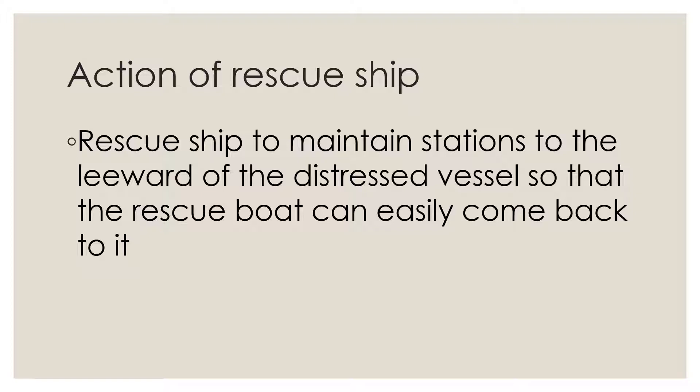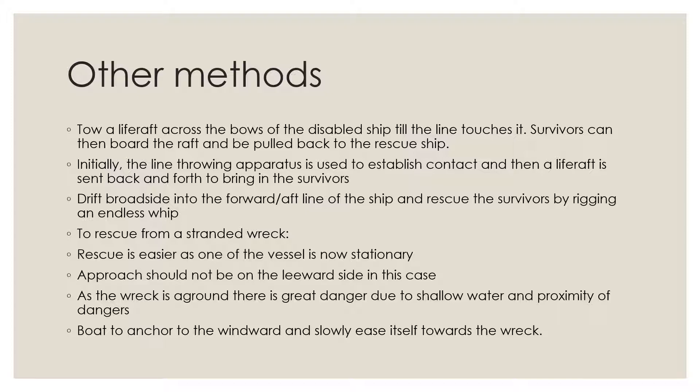The rescue ship should maintain station to the leeward of the distressed vessel so that the rescue boat can easily come back to it. Some of the other methods that can be used include towing a life raft across the bows of the disabled ship until the line touches it. Survivors can then board the raft and be pulled back to the rescue ship. The line throwing apparatus, or LTA, may be used to establish contact, and then a life raft is sent back and forth to bring the survivors.